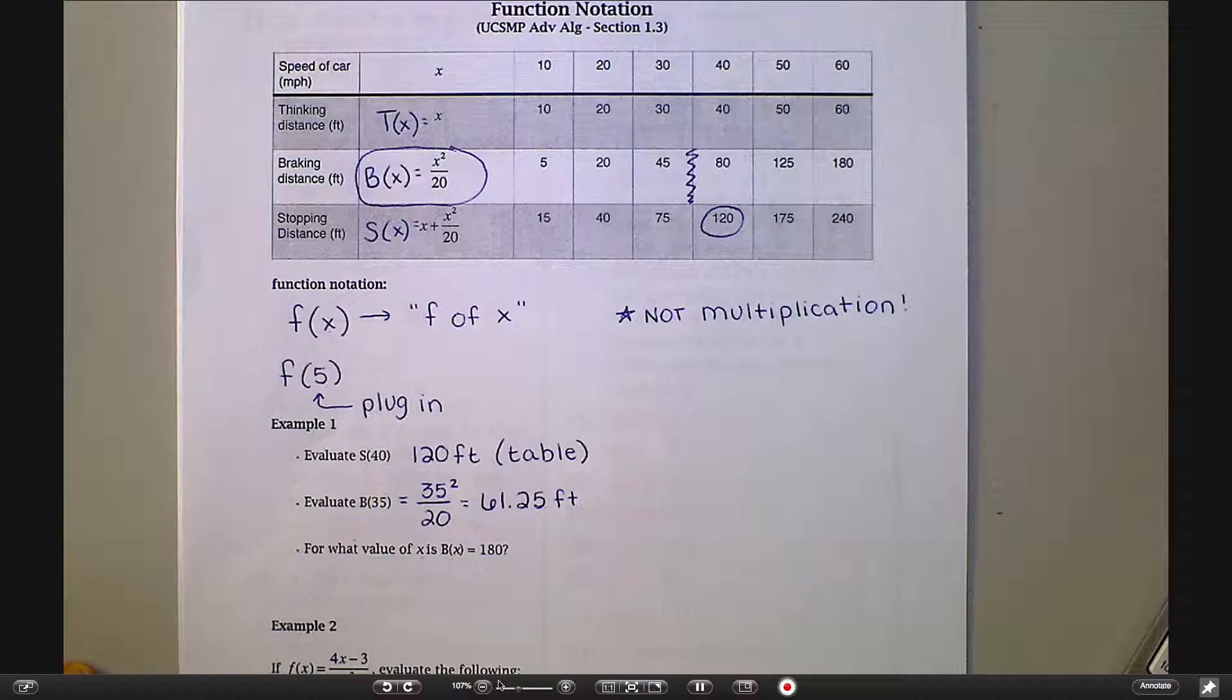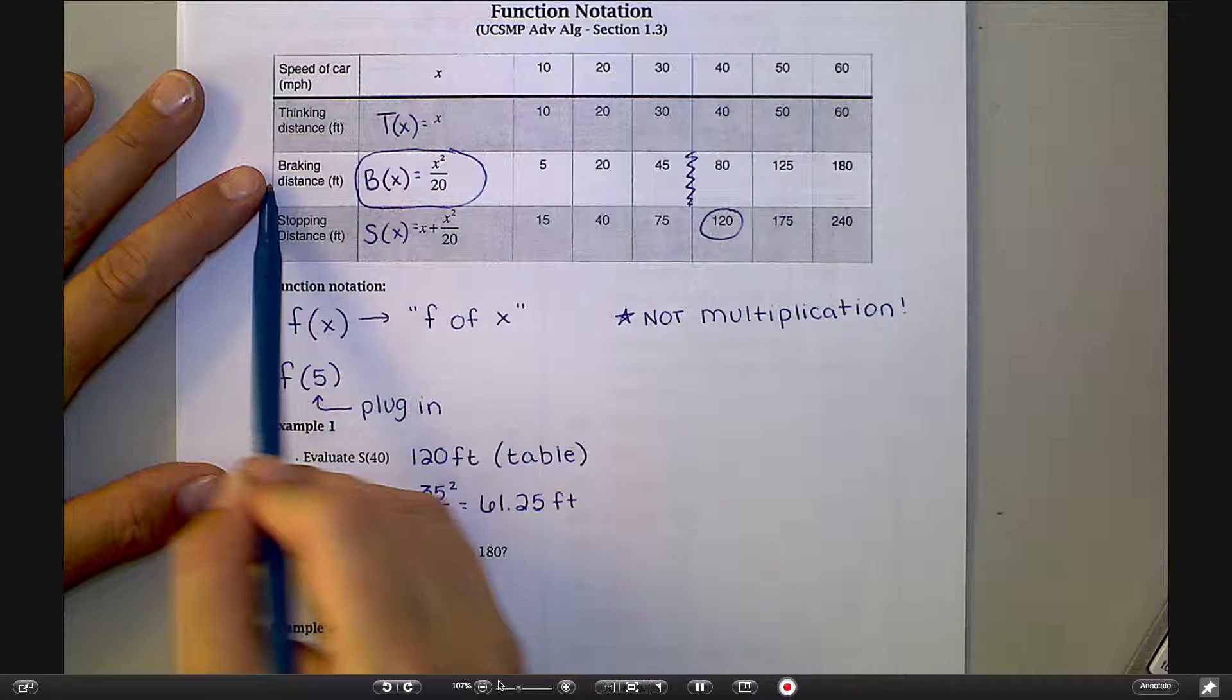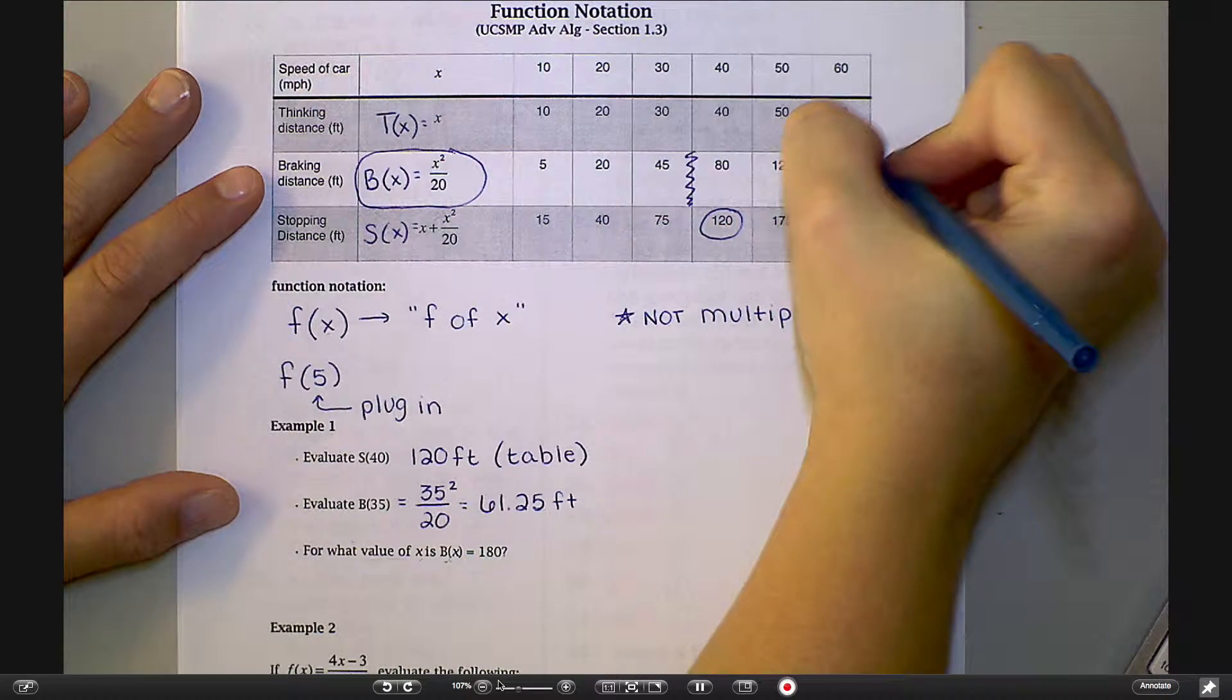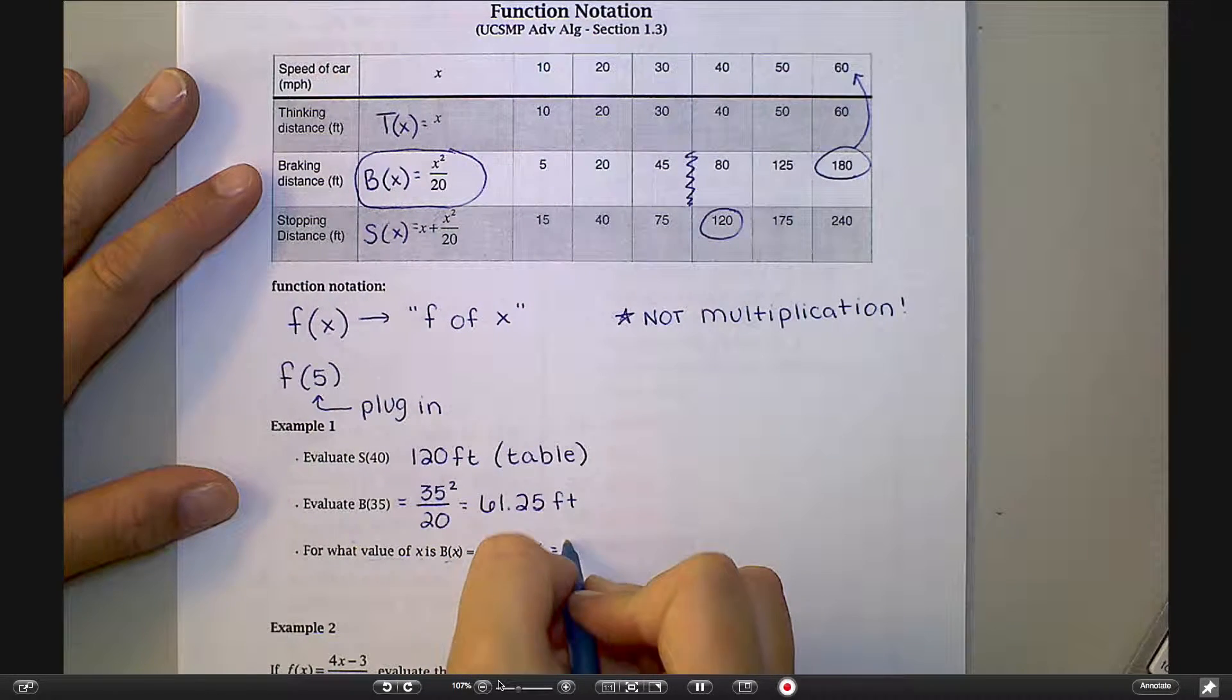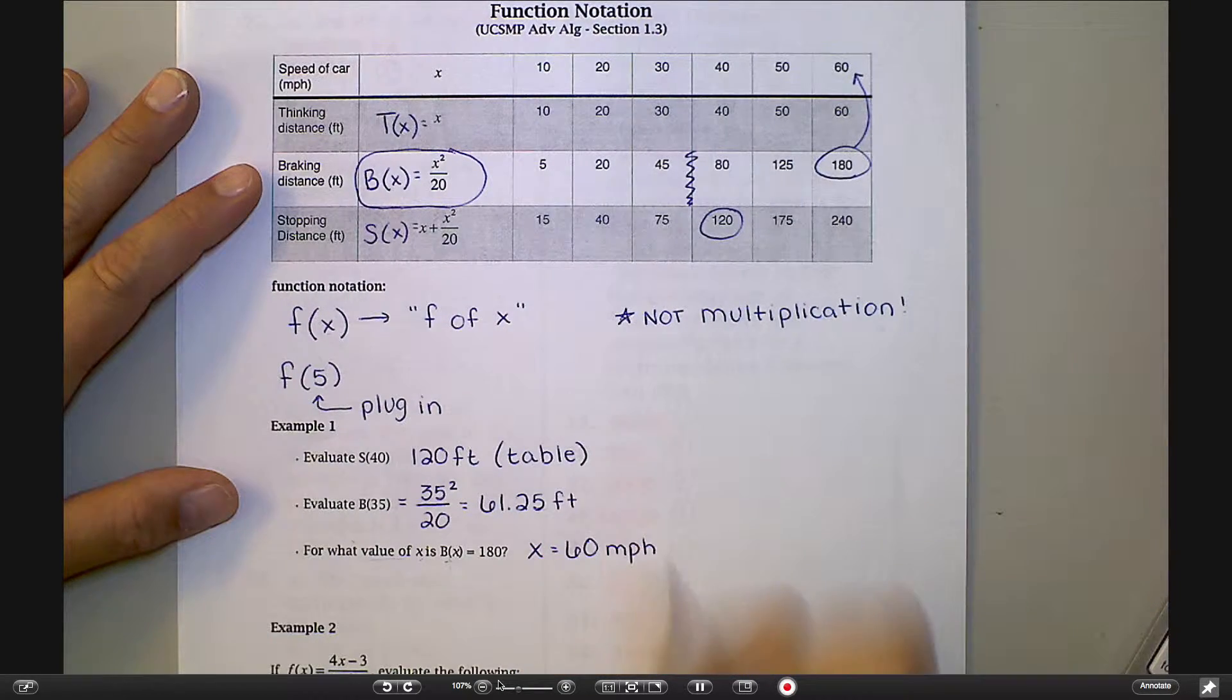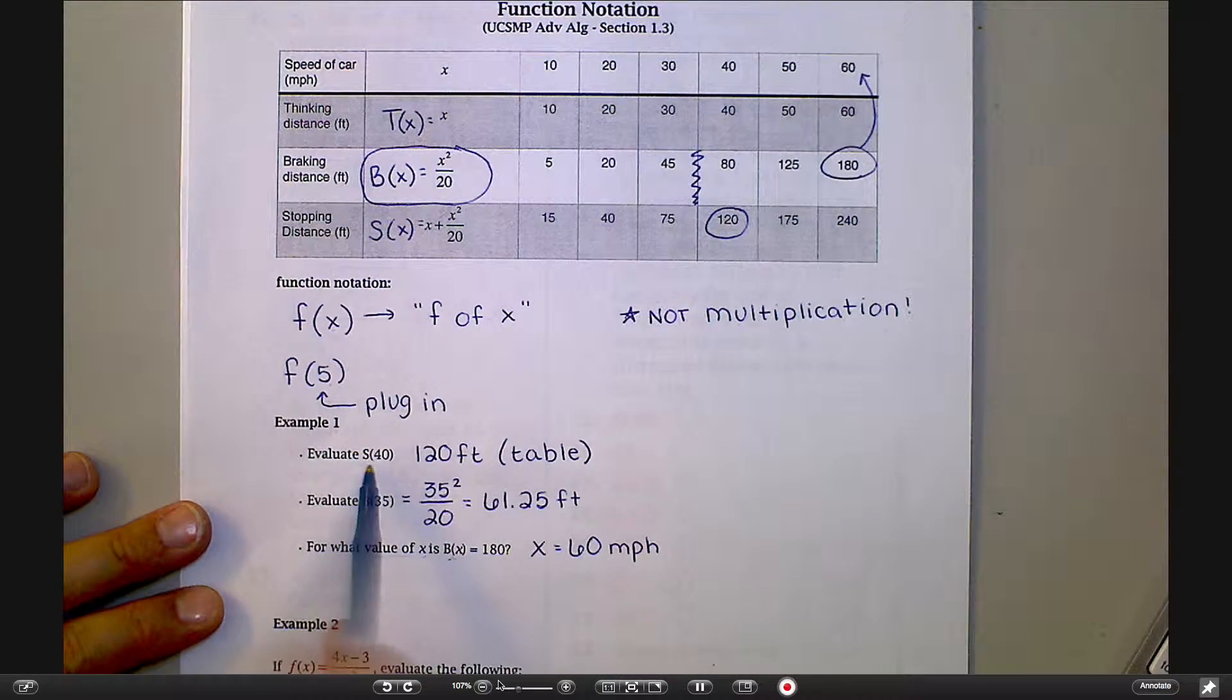Perfect. You got it. So if I look at braking distance - and I'm looking at braking distance because it's b of x - I want to look for where the answer is 180, which is right here, and then I want to give the speed that I will be going. So that's 60 miles an hour. Does that make sense how to use that information? Really the lesson today is how to use this notation.